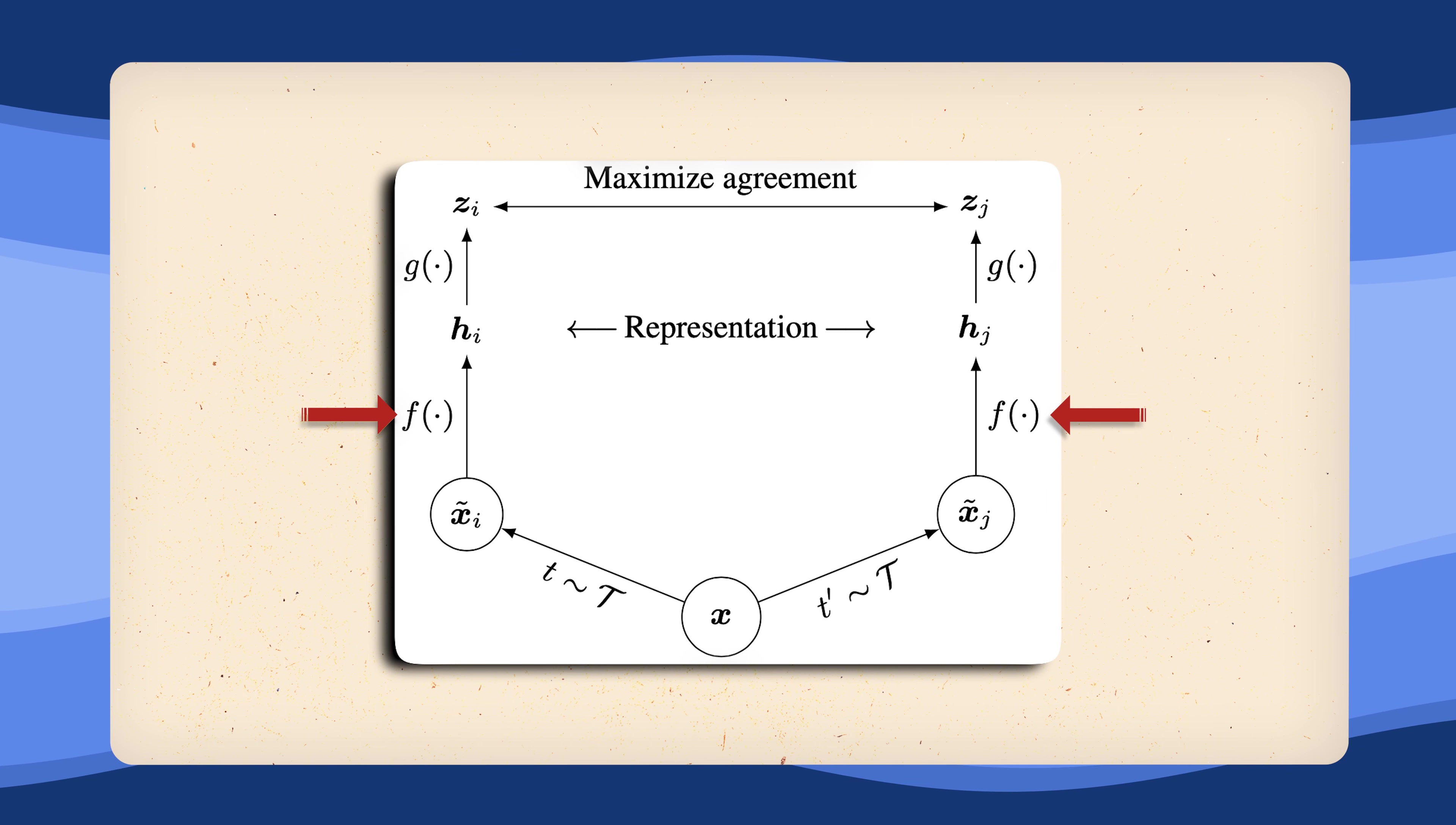However, applying our contrastive loss to those representations directly simply empirically doesn't return the best results. Instead, the authors introduce a second projection network that then returns the embeddings we actually apply our loss to.